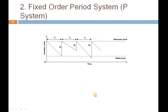This is the diagram for the fixed order period system (P-system). We have the safety level and maximum level on the inventory axis, and time on the other axis. In the Q-system, there was a reorder level plotted in between the maximum and safety levels, but here that level is missing — because in the period system, we plot it on the time axis instead.